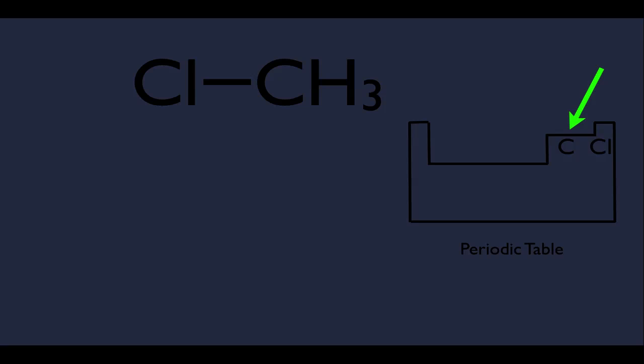So Cl is more electronegative, which means that in the bond between chlorine and carbon, since Cl is more electronegative, it would be partially negative — it likes electrons more than carbon. So more electrons would be on the chlorine side, making it partially negative, and less electrons on the carbon side, making carbon partially positive. This is your typical polar bond.